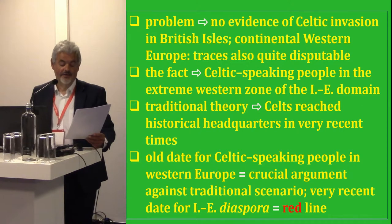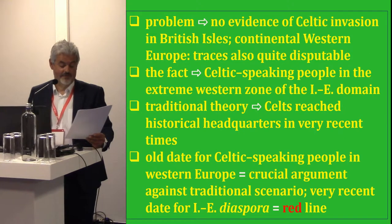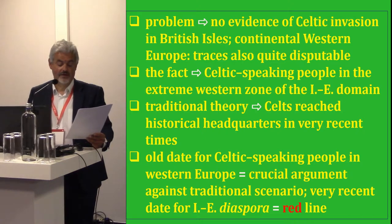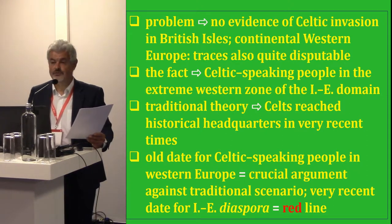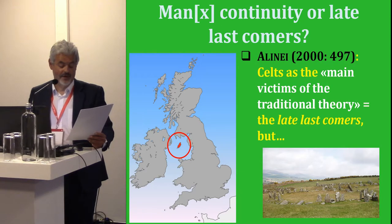They could only reach their historical headquarters in very recent times according to traditional theory, because the further you go, the later you arrive, and Celtic tribes supposedly came from an ancestral Indo-European Urheimat far, far away. Therefore, an old date for Celtic-speaking people in the western fringes of Europe can be a crucial argument against the traditional scenario, given that a very recent date — Neolithic or Epi-Neolithic age — for Indo-European diaspora represents one of those red lines, no trespassing, of the theory. Alinae in 2000 accurately describes the Celts as the main victims of traditional theory, since they were compelled to appear in their historical homeland right at the last moment, when all the other Indo-European tribes had already occupied their own respective historical territories. They were simply the late last comers.